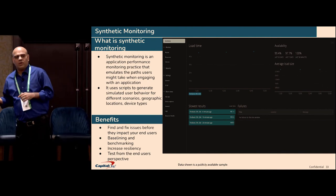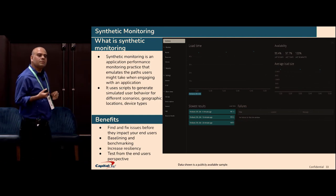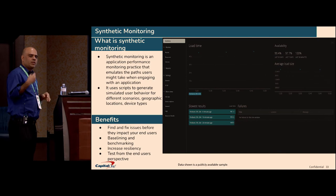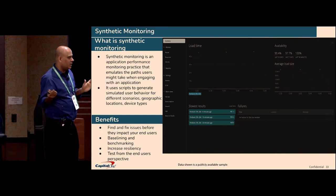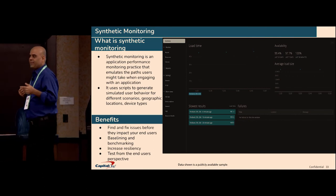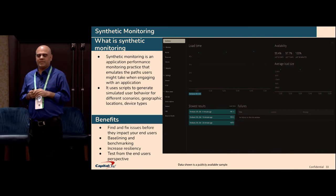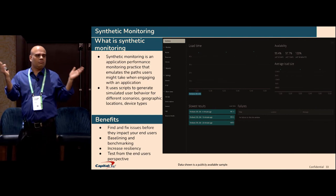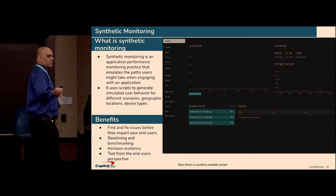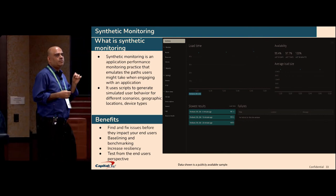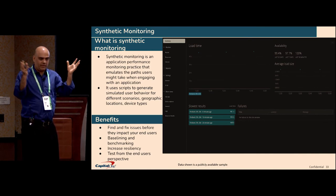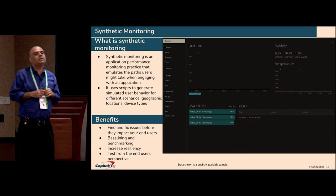Synthetic monitoring is active, proactive monitoring where you write a script simulating a user path through an application. A bot executes the script at periodic intervals — every 15, 20, or 30 minutes — so if the website has issues, you get an alarm fast before it impacts end users. You can run scripts across geographies and devices and track data from across all regions. This data can be used to baseline and benchmark your application. Synthetic monitoring works at the browser level where all dynamic components — data from microservices, BFFs — come together, so you're monitoring from the end-user level.